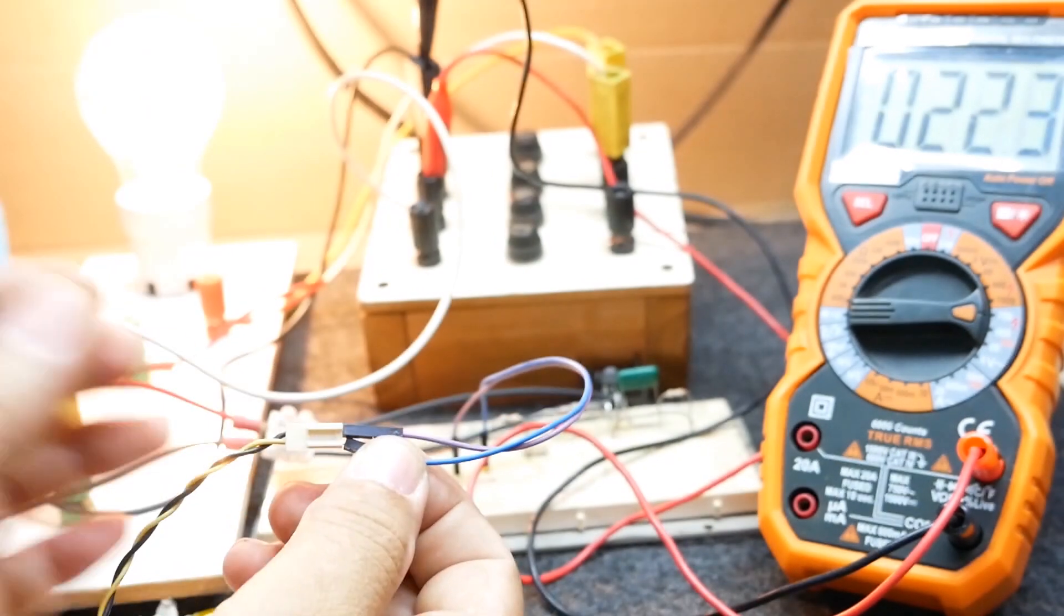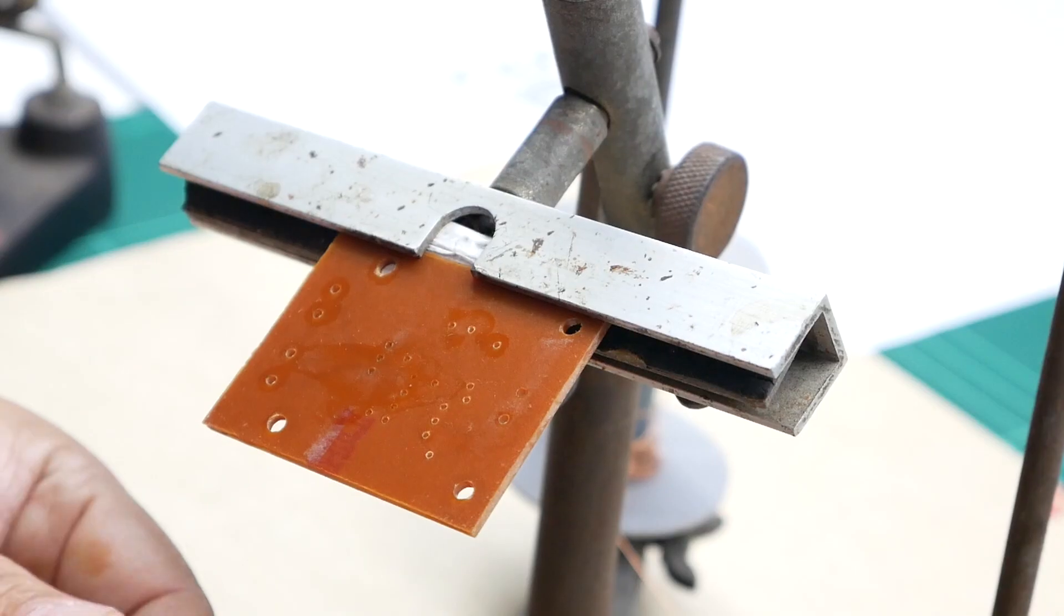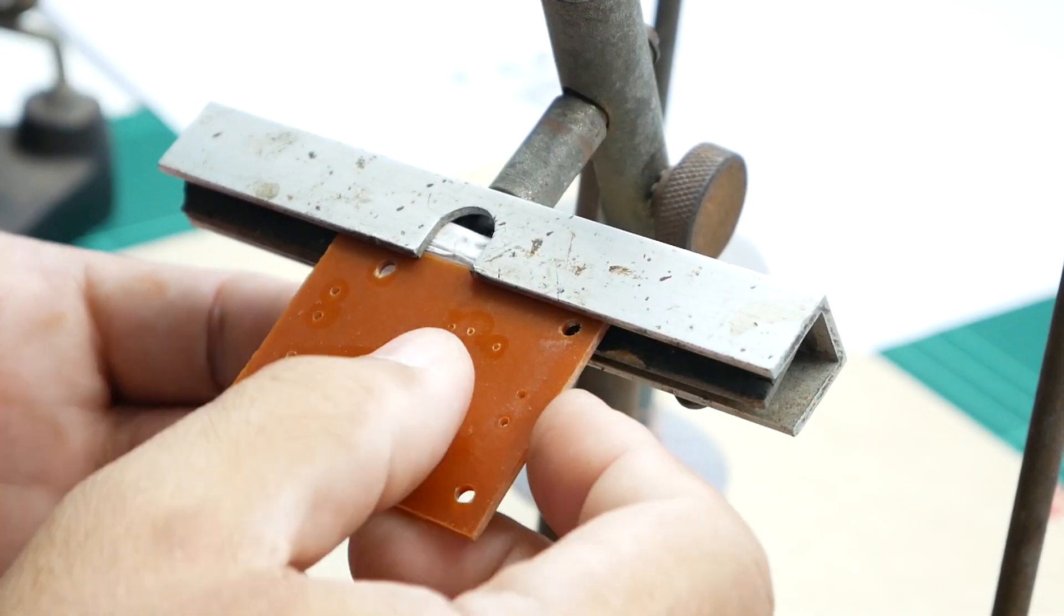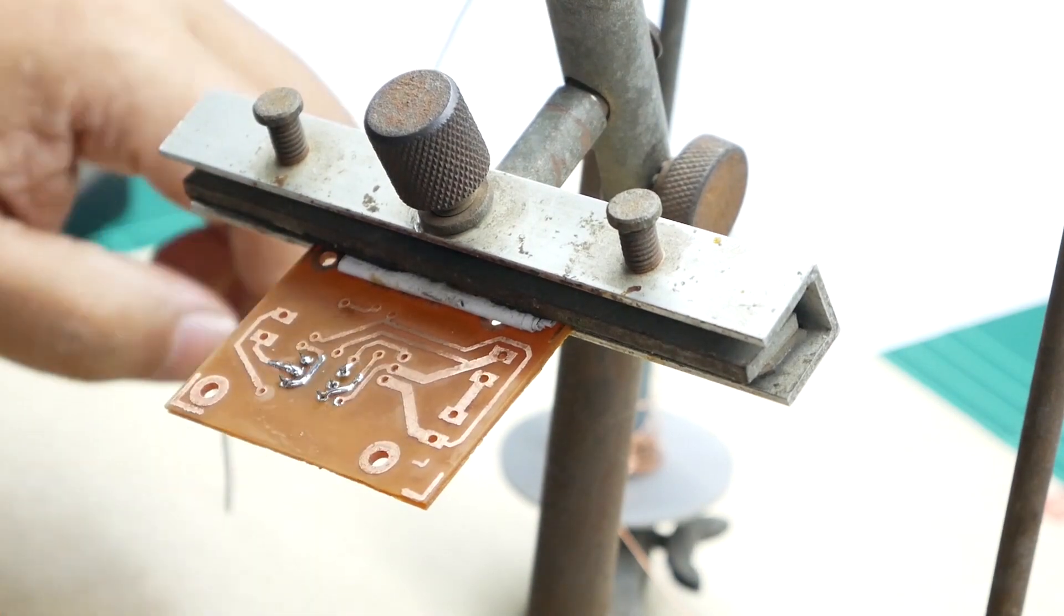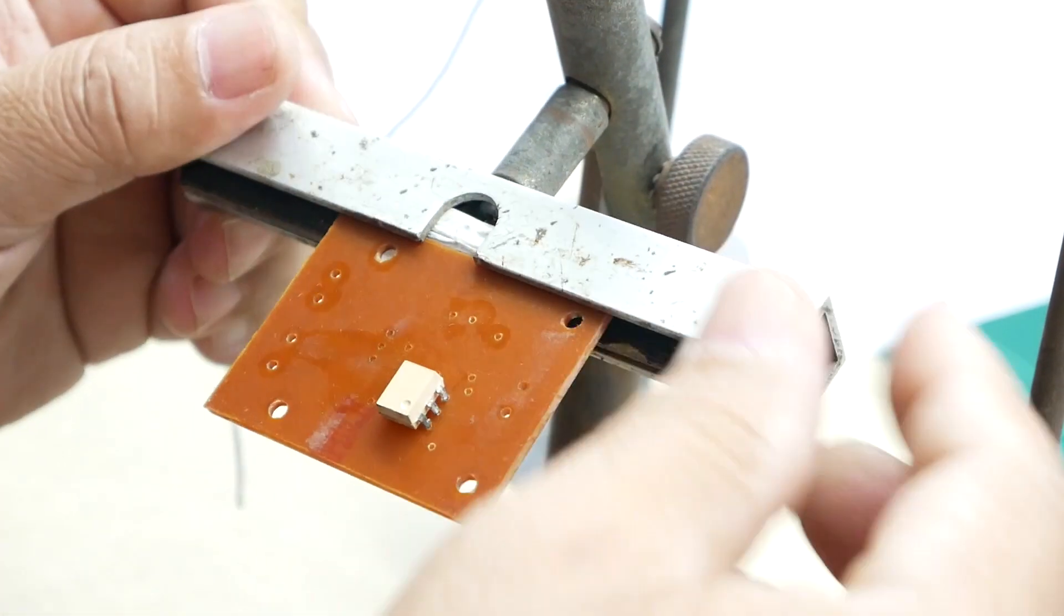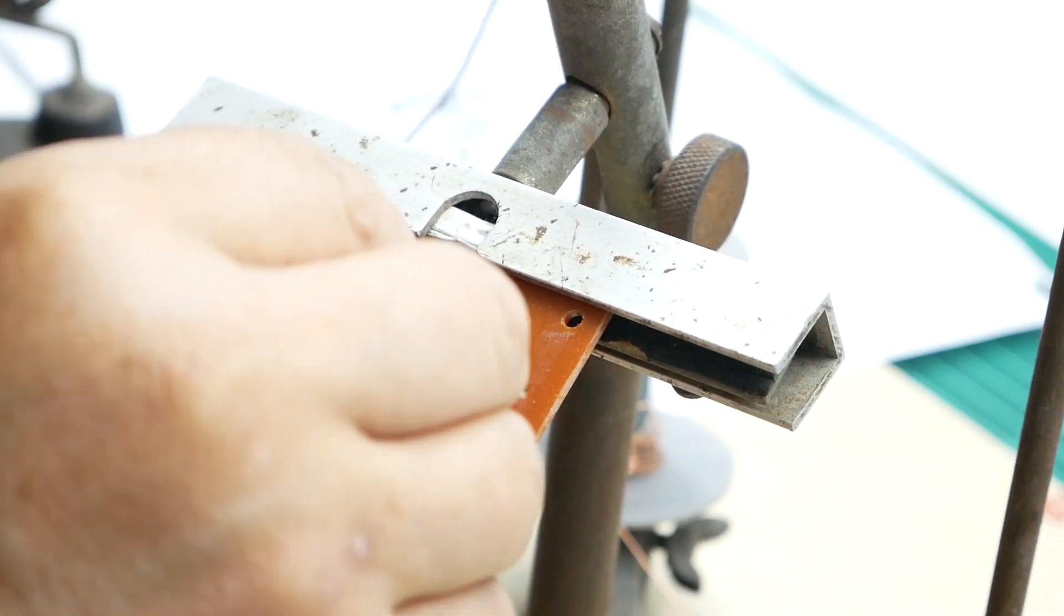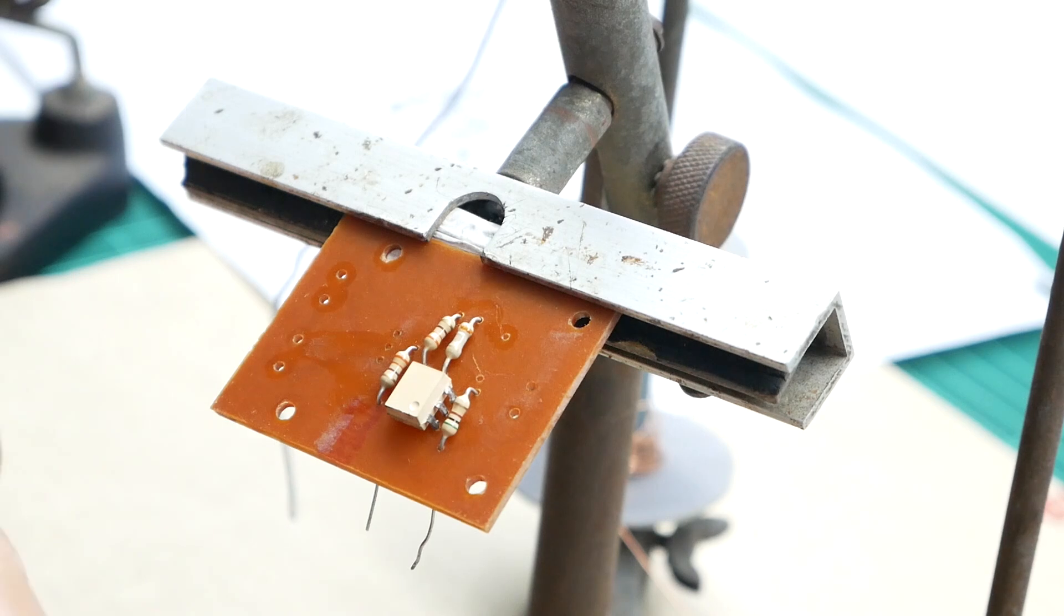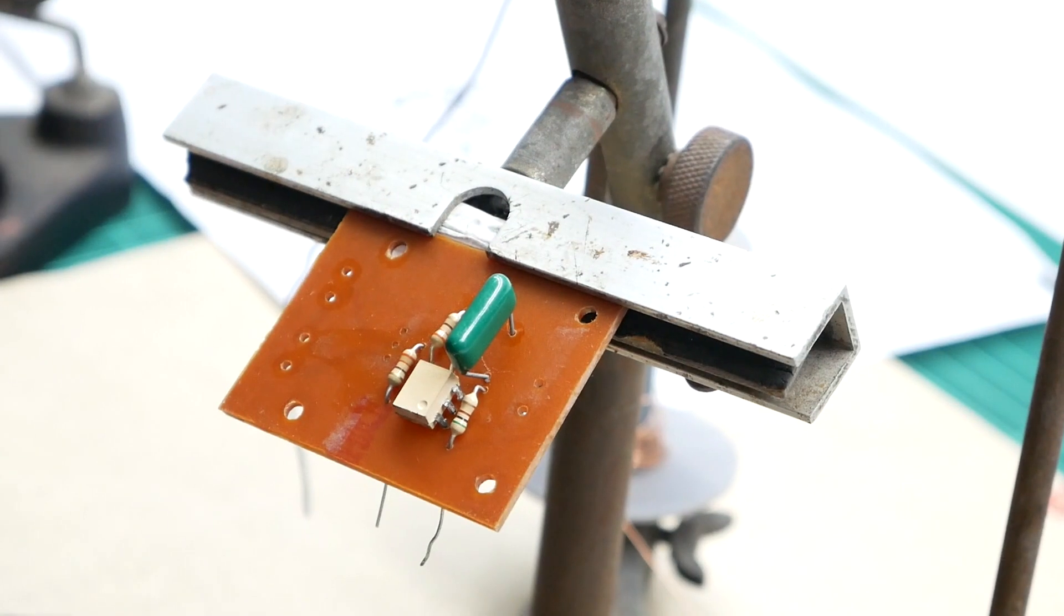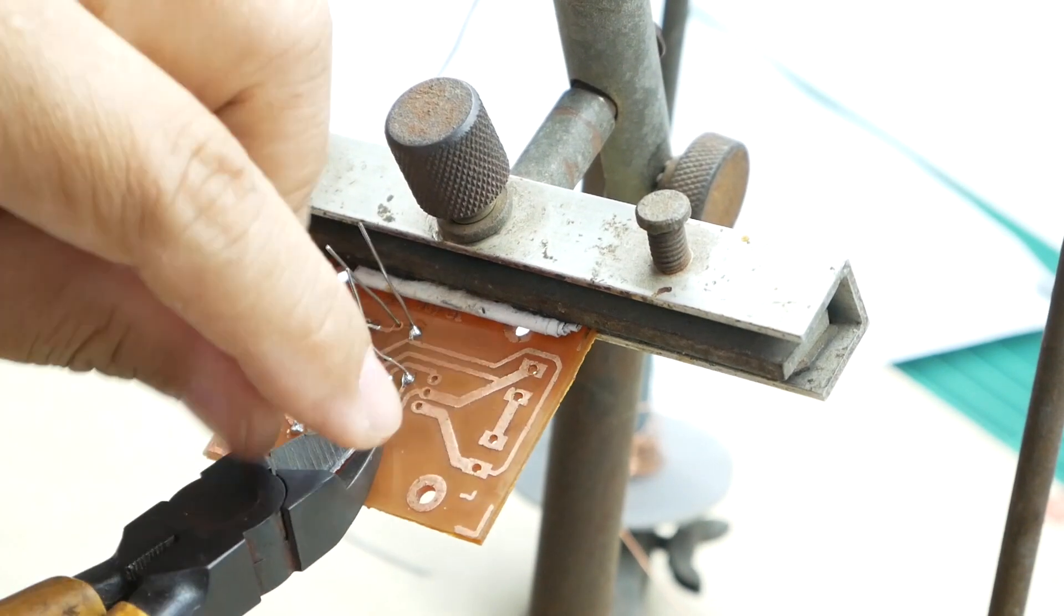Next step, we are going to make a solid-state relay. For making the circuit board, you can watch my video on Mr. Project TSE's channel.